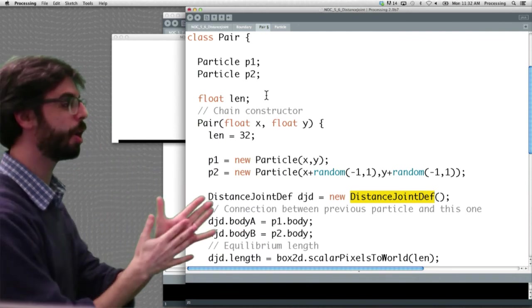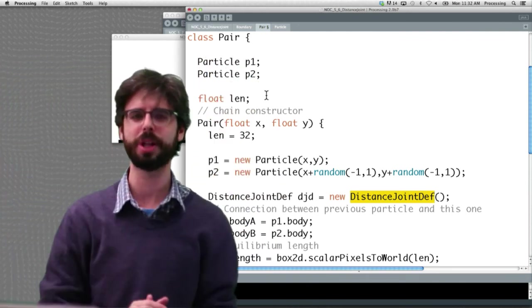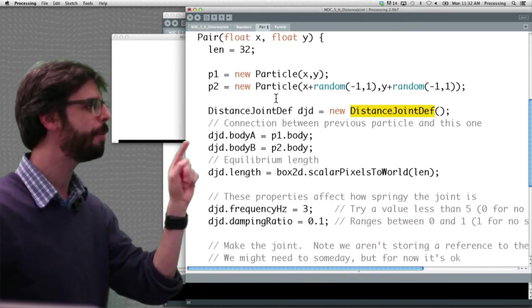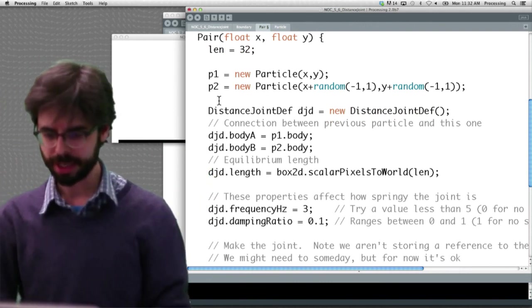So how's it working here? We have two particle objects. We create them like we create any old particle objects, and then we make the joint. So down here we're now making the joint. We're following those steps.